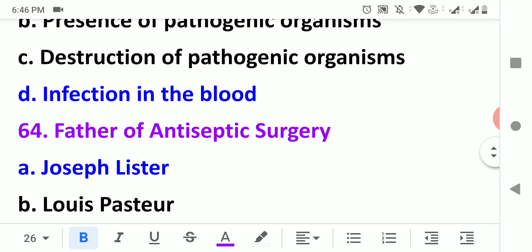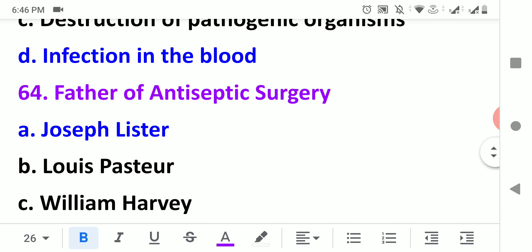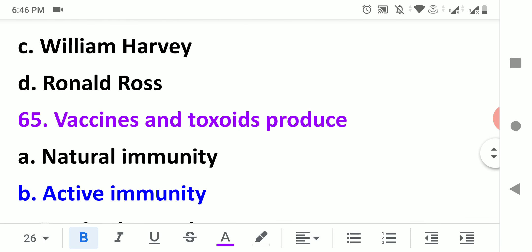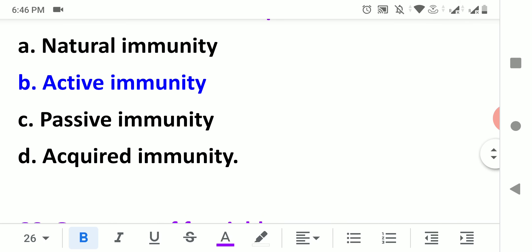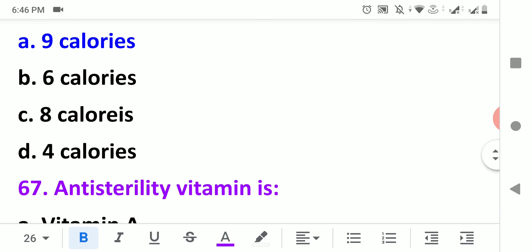Causative organism for malaria is plasmodium. Sepsis means infection in the blood. The father of antiseptic surgery is Joseph Lister. Vaccines and toxoids provide active immunity.